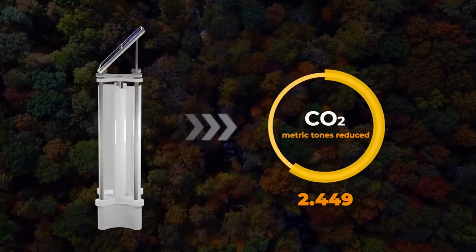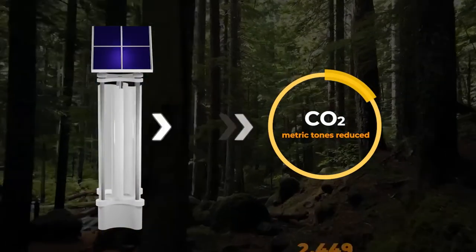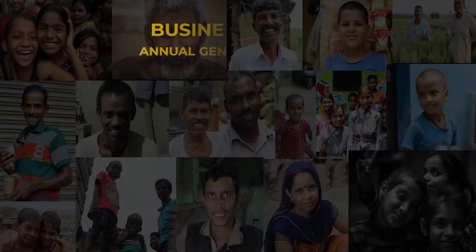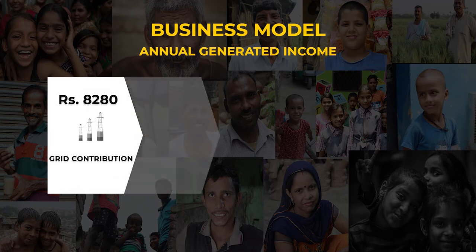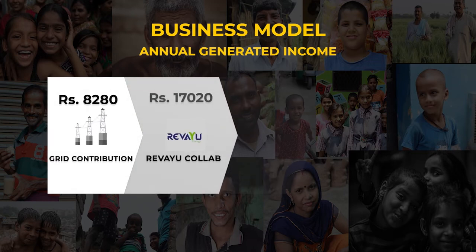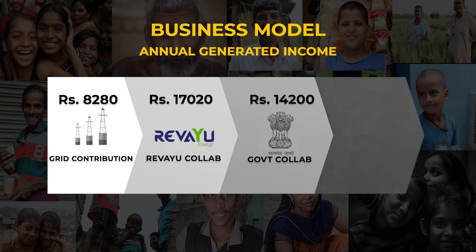Approximately 2.449 metric tons of carbon emissions can be reduced through our product annually. It is estimated that a revenue of Rs 8,280 from grid contribution along with Rs 31,220 from Revayu and the government collaboration will be generated annually by our product.